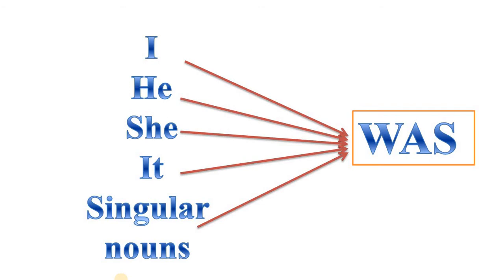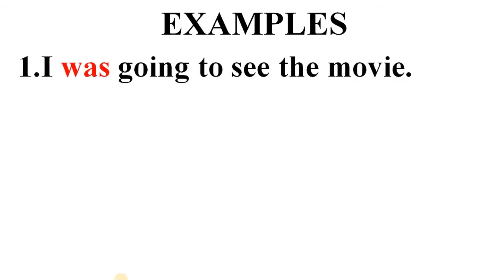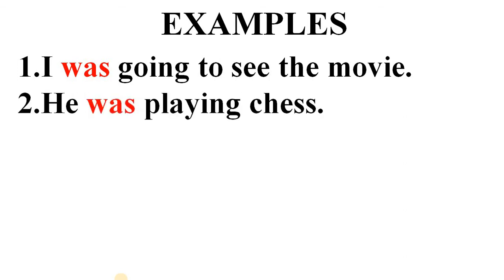Now let's go through some examples to know the uses of 'was'. First: I was going to see the movie — with 'I', we are using 'was'. Second: He was playing chess — with 'he', we are using 'was'.